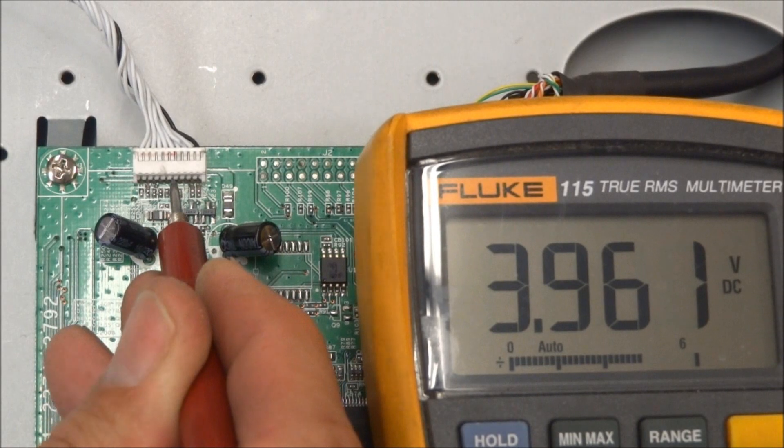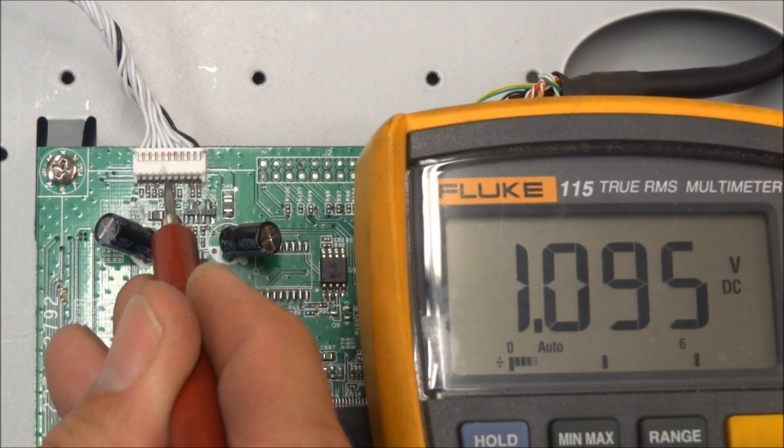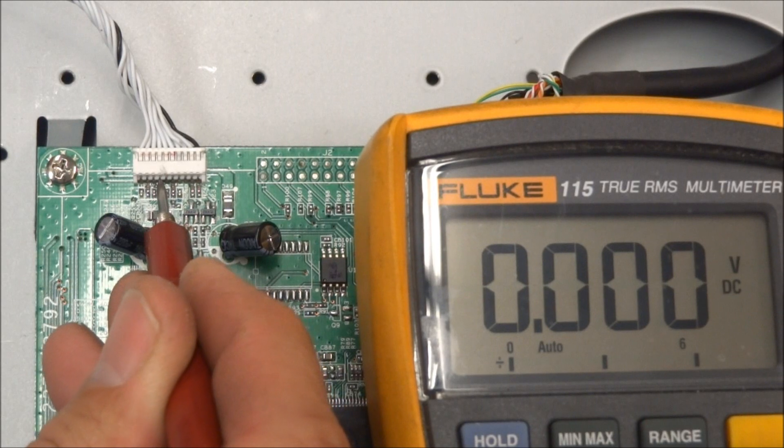Now pin number 5 is the infrared remote control. So as I press the remote button, you can see the voltage jump around there, and that's what you want to see indicating that the remote receiver is working. Pin number 6 and pin number 7 should both be effectively ground, and they are.